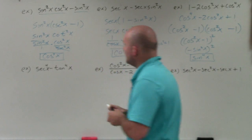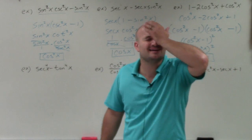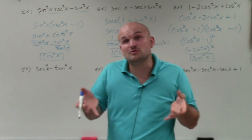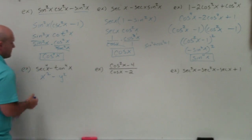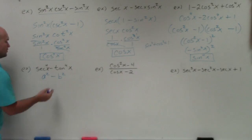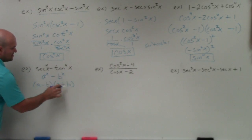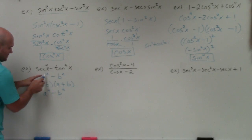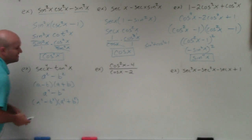Over here I have secant to the fourth minus tangent to the fourth. This gets students because you have to remember how to factor things to the fourth power with two terms — we use the difference of two squares. If I had a squared minus b squared, the factored form is (a minus b)(a plus b). For a to the fourth minus b to the fourth, it becomes (a squared minus b squared)(a squared plus b squared). So secant to the fourth minus tangent to the fourth factors into (secant squared of x minus tangent squared of x)(secant squared of x plus tangent squared of x).